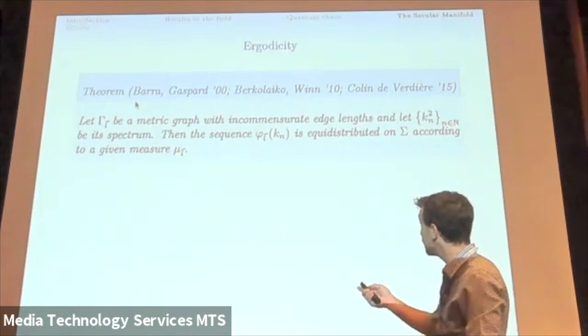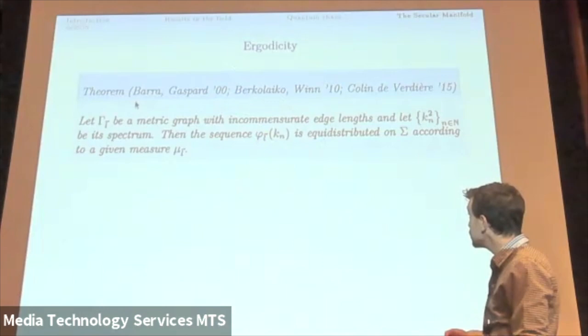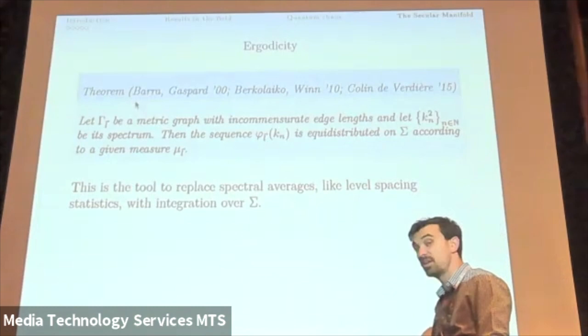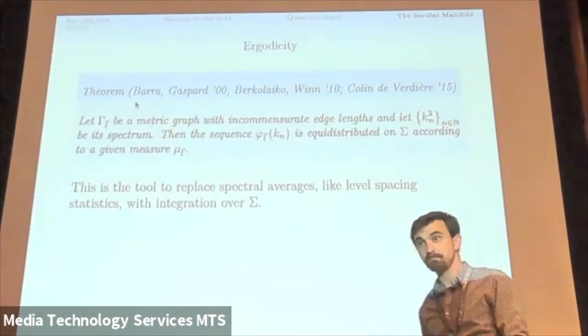So the sequence, once I get the edge length, the direction of this flow to be irrational, this is the incommensurate edge length, then the sequence of hitting points, these points, these hitting points, the sequence is going to be equidistributed on sigma according to some given measure which depends on the metric. And this is the tool to replace spectral averages like level spacing statistics with integration over sigma.